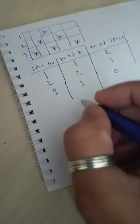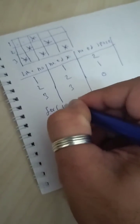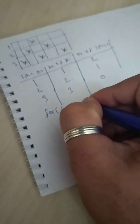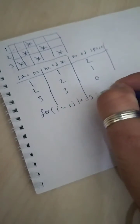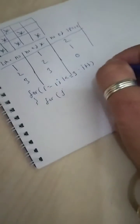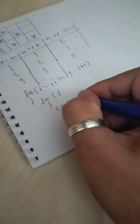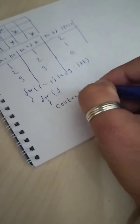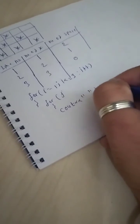To create such a pattern we need to write a loop. So I will write: for i equals to 1, i should be less than or equal to 3, and i plus plus. Then I will create a nested inner loop to print the spaces on the left side.